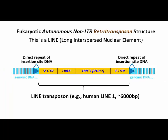LINEs are autonomous non-LTR retrotransposons. They encode enzymes needed for transposition and, like other transposons, generate target site direct repeats flanking the inserted element. But they don't have the long terminal repeats we just saw. Instead, flanking the open reading frames — those ORFs — are the 5' and 3' untranslated regions, or UTRs.